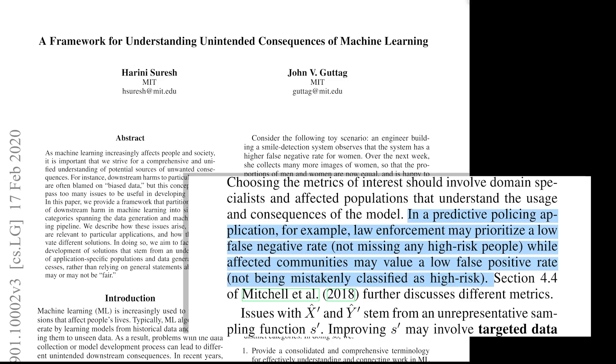Part of formulating your problem also involves talking to both the people who plan to use the algorithm as well as the people that the algorithm will be used on. For predictive policing algorithms, law enforcement — the users of the algorithm — may want an algorithm that identifies any high-risk people, with the trade-off of misidentifying innocent people in the process. On the other hand, the communities that this algorithm might be used on might want an algorithm that doesn't misidentify innocent people, at the expense of not catching all of the high-risk people.